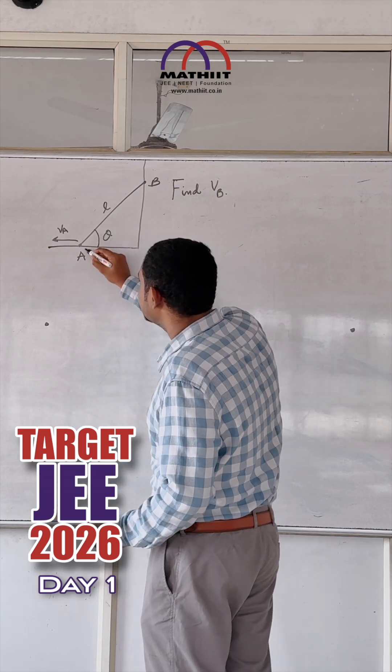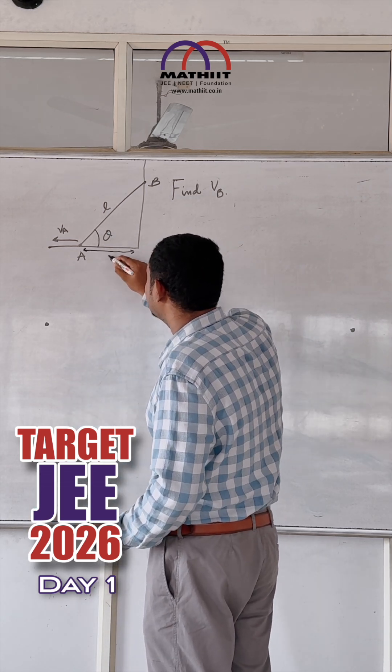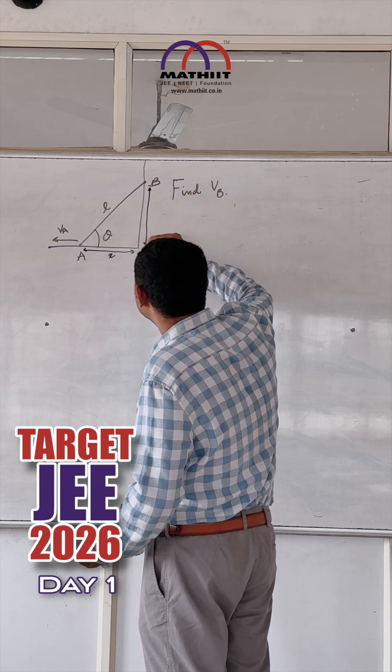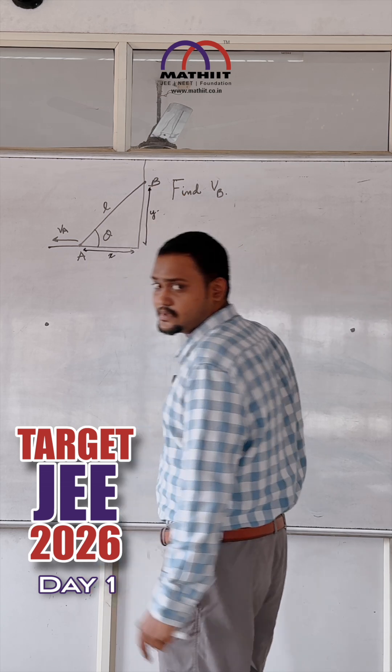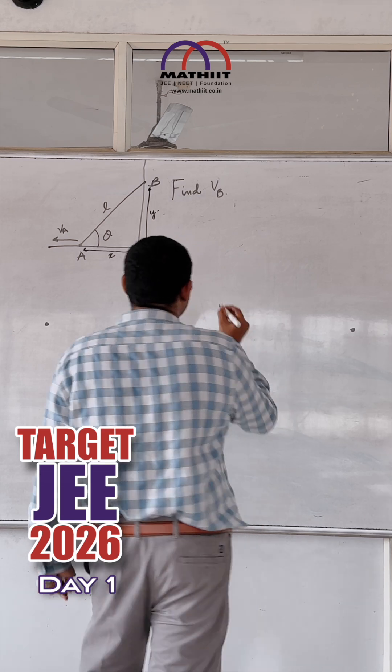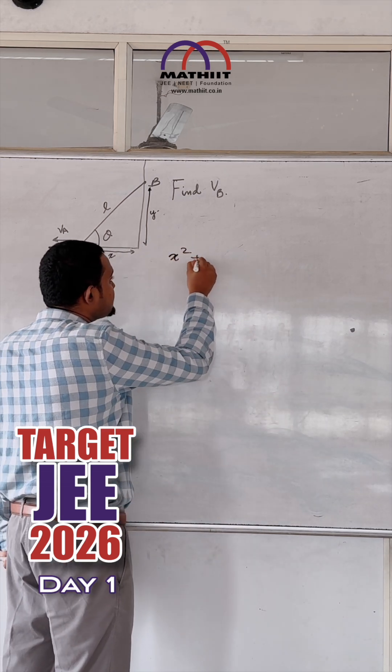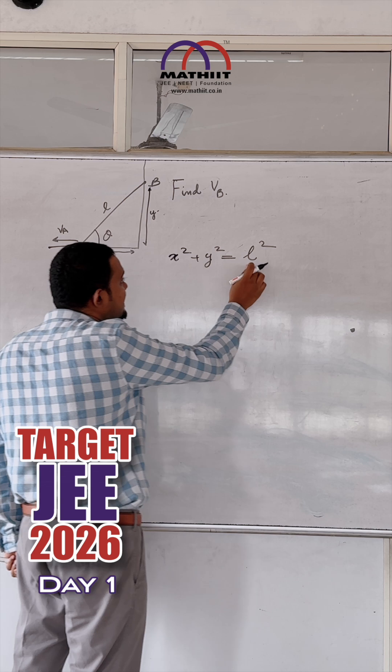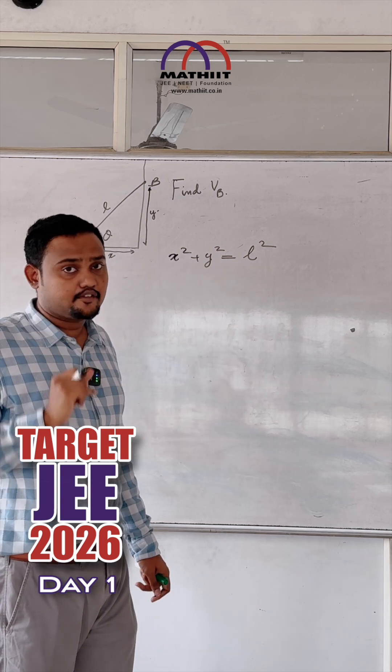The way you solve this is using the distances from the origin. The distance is X, the distance is Y. Now the first equation is that X square plus Y square is equal to L square where L is a constant, L is the length of the rod.